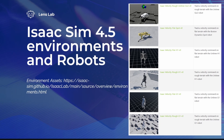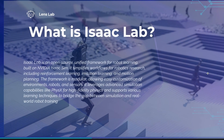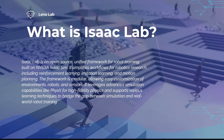Many companies have already added their assets to IsaacSim 4.5. For Unitree, you can use Go2, Go1, A1, H1, and G1. These are legged robots. You can also use Spot from Boston Dynamics, and additionally robotic arms from various companies, though we are not going to cover robotic arms and dexterous tasks. You can check the other available assets via the link I'll add to the video description.